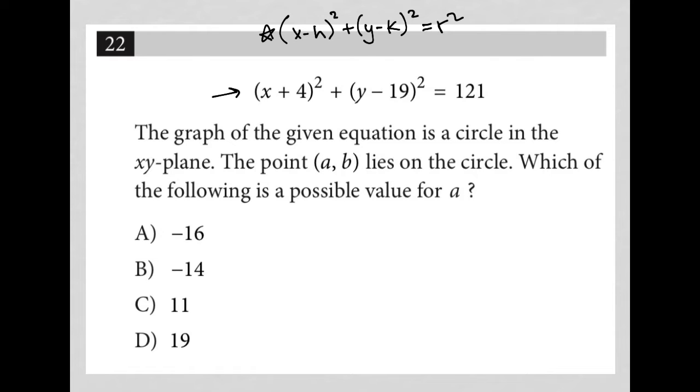I know that the circle has a center at h comma k, which means that our center here would be negative 4 comma positive 19. It's like the opposite signs of those numbers there. And what else do I know? Well, I know that r is the radius. So here if r squared is 121, that means my radius is equal to 11.